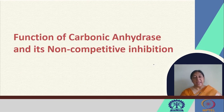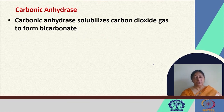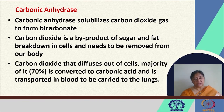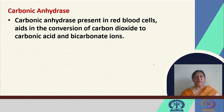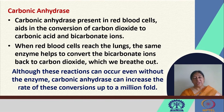Looking now at an example of non-competitive inhibition in carbonic anhydrase: carbonic anhydrase is a very important protein that solubilizes carbon dioxide gas to form bicarbonate. Carbon dioxide, a byproduct of all sugar and fat breakdown in cells, must be removed from the body as it becomes toxic. Once it diffuses out of cells, the majority is converted to carbonic acid and transported by the blood to the lungs. Carbonic anhydrase in red blood cells aids the conversion of carbon dioxide to carbonic acid and bicarbonate ions, and it can increase the rate of these conversions manifold.